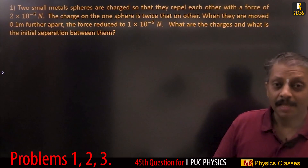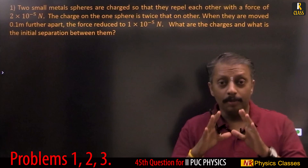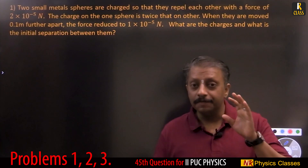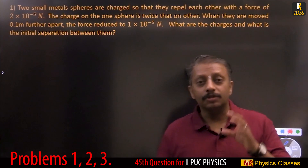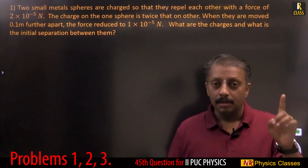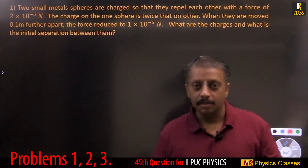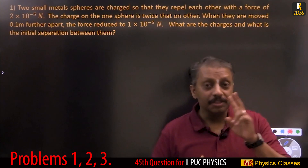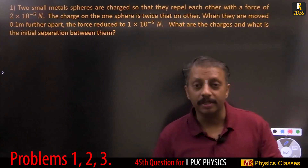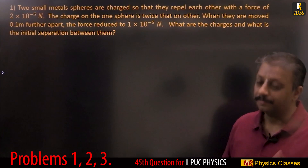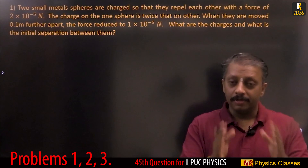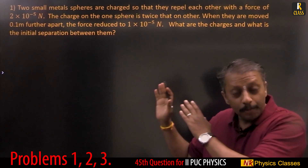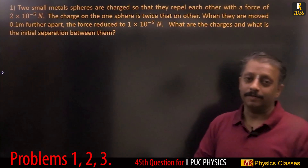Students, let us concentrate on problems for the final exam — second PUC physics. Let us concentrate on the 45th question. Usually the 45th question comes from the first chapter or second chapter, so let us cover the most probable problems from these two chapters: electric charges and fields, and electric potential and capacitors. Be ready with paper and calculator. First, copy the problem, then follow the solution.